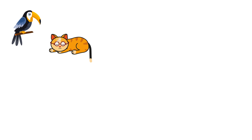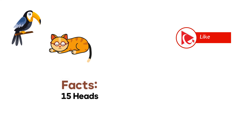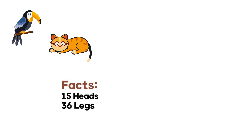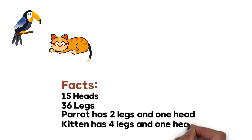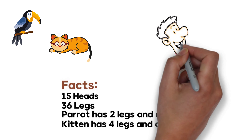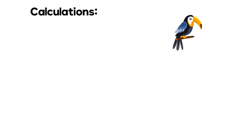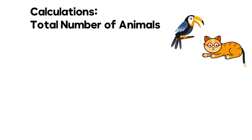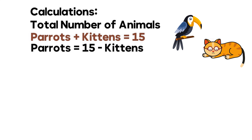You start to solve these types of challenges by looking at the facts: 15 total heads and 36 legs. Each parrot has two legs and one head; each kitten has four legs and one head. Since both animals have one head, the number of heads equals the total number of animals — so there are 15 animals in the store. Based on this, we can create a formula: number of parrots plus number of kittens equals 15, which means number of parrots equals 15 minus number of kittens.